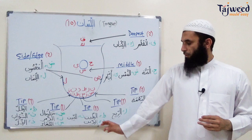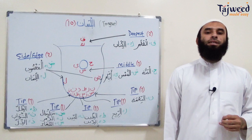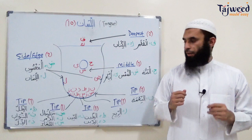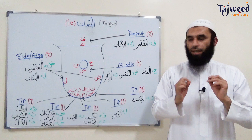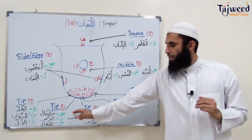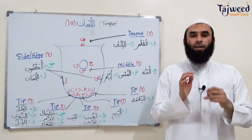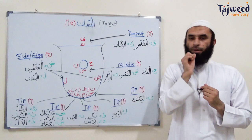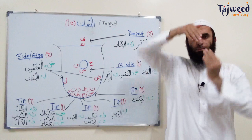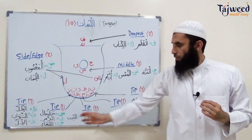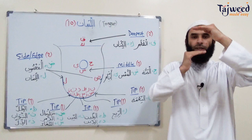Next are the safi letters — the whistling sounds. Three letters have the attribute of a whistling sound: Sa, Zai, and Sin. As in az-zumar and az-sanawat. The makhraj point is the tip of the tongue pronounced between the plates of the front upper and lower incisors — between the top and bottom teeth — giving that whistling quality.